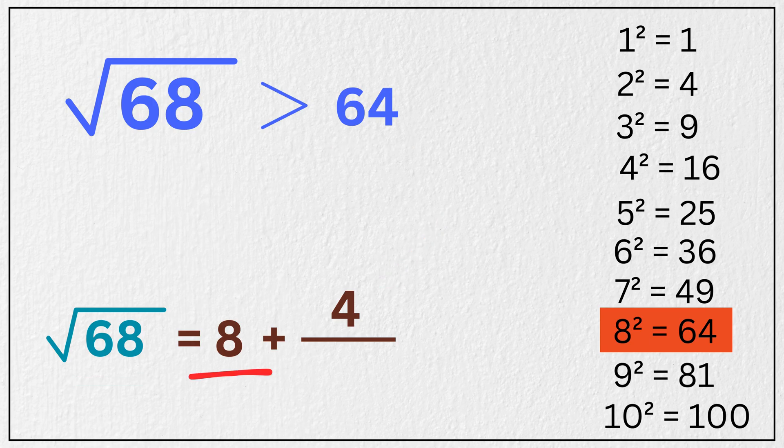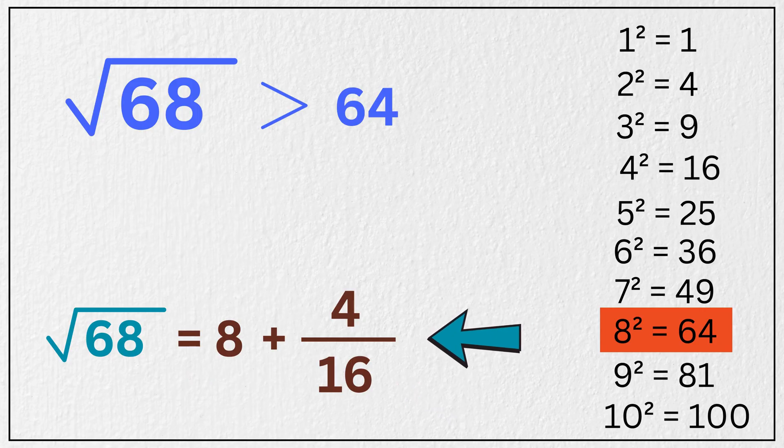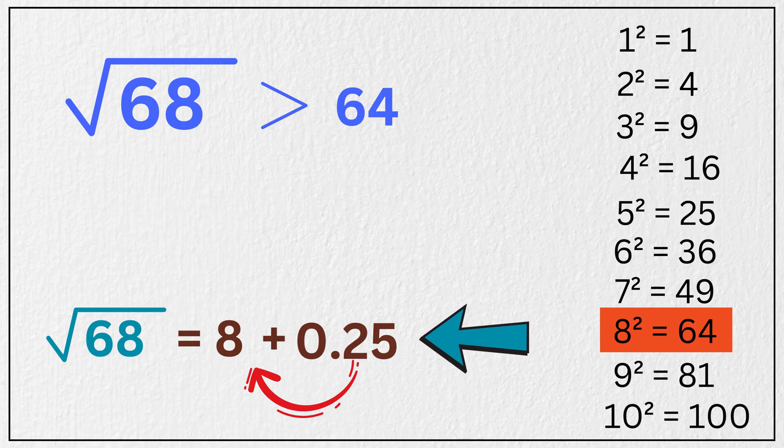Then take this 8 and double it. That gives you 16, put that here in the denominator. Now simplifying this, 4 over 16 is 1 over 4, which is 0.25. Adding this 8 to that, you get 8.25.